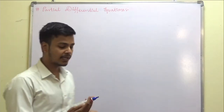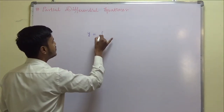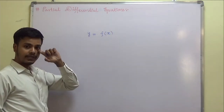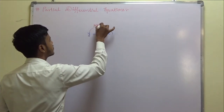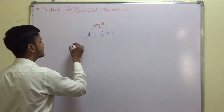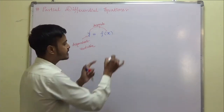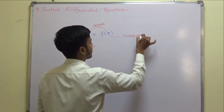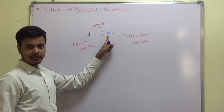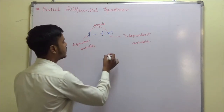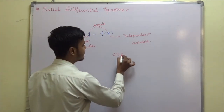Now let me start with the basics. When we learned ordinary differential equations, we had y equal to f of x. Here, y depends on x — y is the dependent variable and x is the independent variable. Whenever there is one independent variable, the derivatives involved are ordinary derivatives, and the equation containing ordinary derivatives is called an ordinary differential equation.